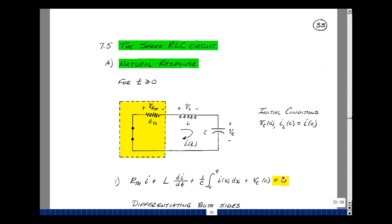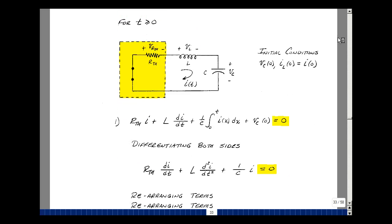Now let's differentiate both sides of the equation. Since R thevenin is not a function of time, we'll just get R thevenin times dI/dt. Same here for the inductance is not a function of time, so just the second derivative of I with respect to T. And then when you differentiate an integral, you just get the argument. So it'll be one over C, and then just be I, really I of T. And then the derivative of a constant is just zero.